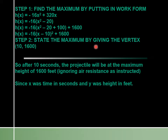Step two: state the maximum by giving our vertex. Our vertex is (10, 1600). When we interpret it, remember that x was our time in seconds. So after 10 seconds, the projectile will be at the maximum height of 1600 feet. Of course, that means we are ignoring air resistance as instructed.